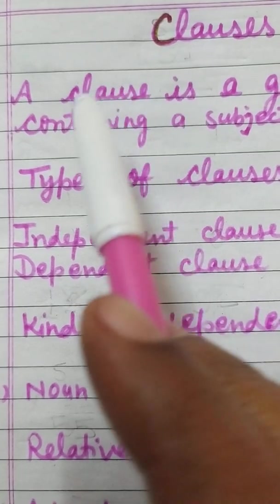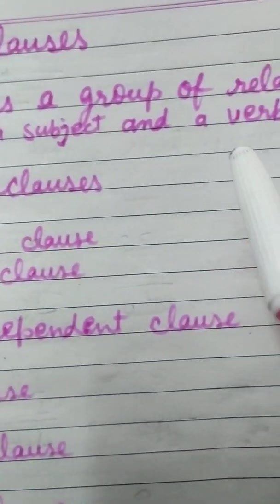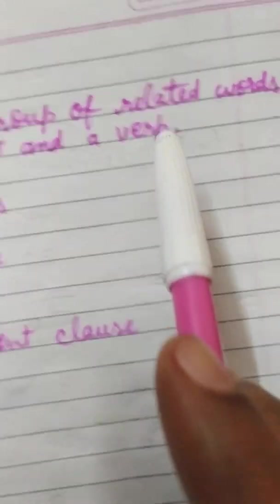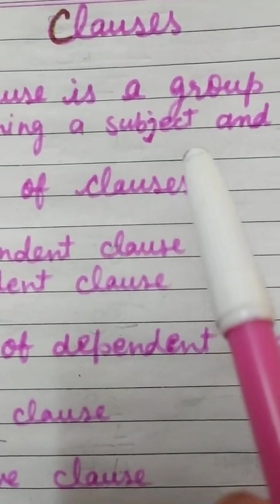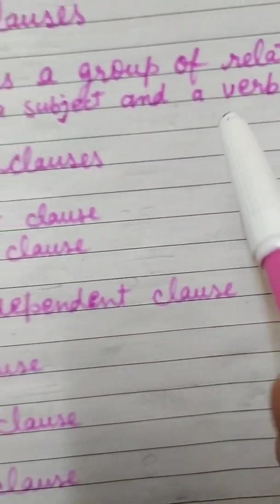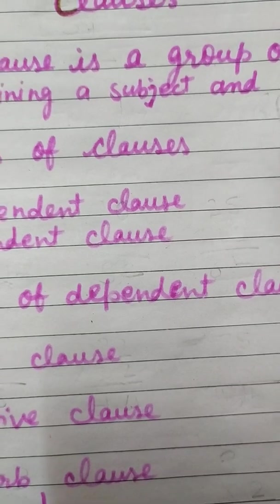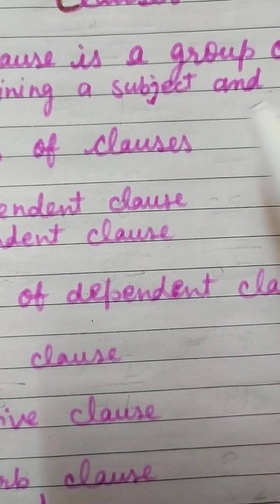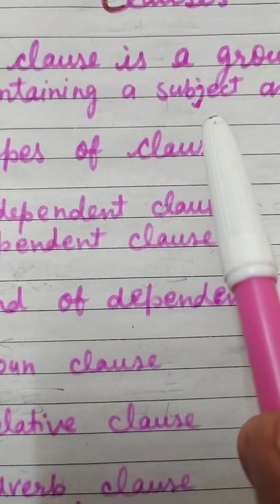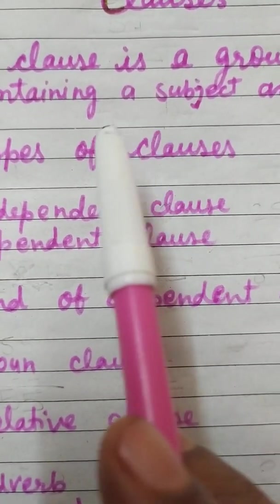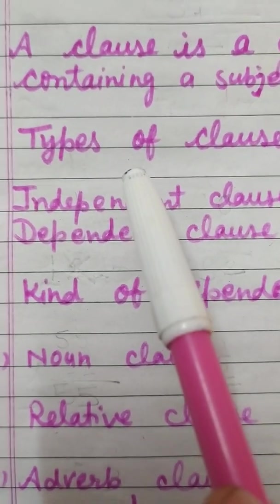What are clauses? A clause is a group of related words containing a subject and a verb. Many times it has a complete meaning also. It has two parts: subject and predicate.